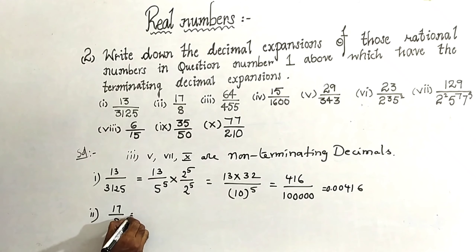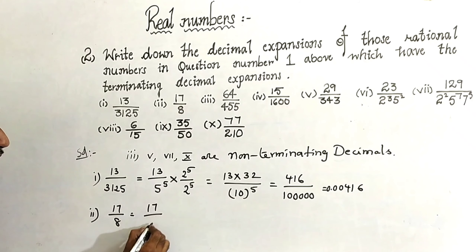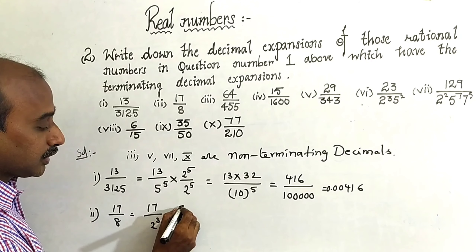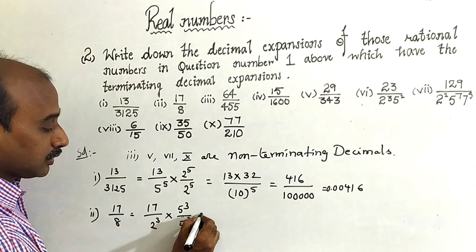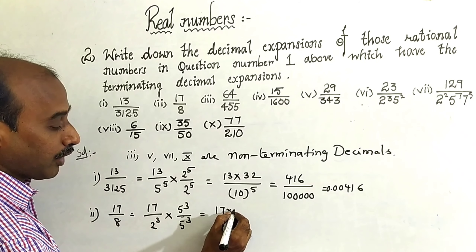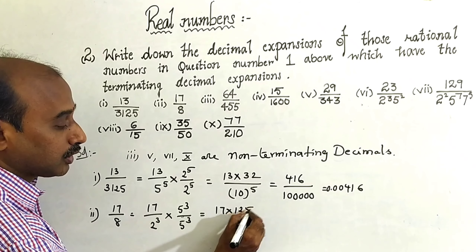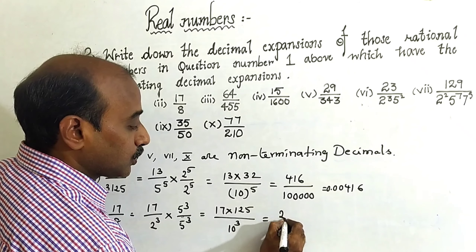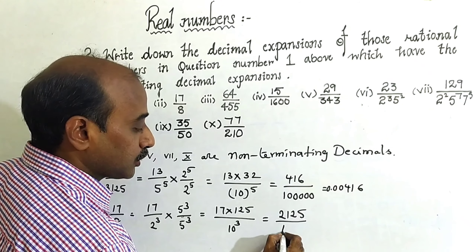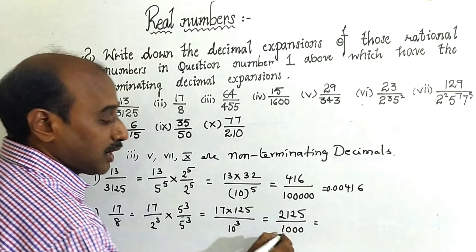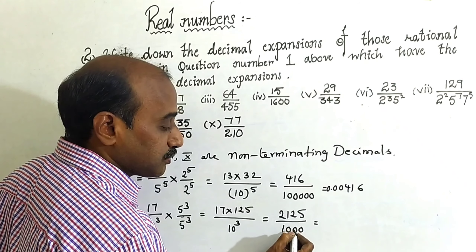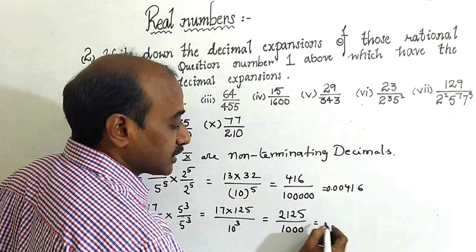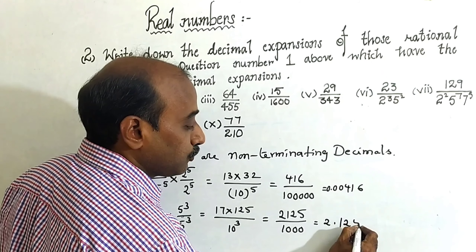Seventeen by 8. This you can write as 17 by 2 cubed. You have to multiply and divide by 5 to the power 3 over 5 to the power 3. This gives 17 into 5 cubed, which is 125, by 10 to the power 3. So 17 times 125 is 2125 by 1000. Placing the decimal after three digits from right to left — one, two, three — this is 2.125.